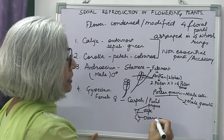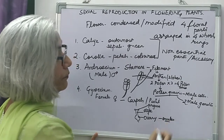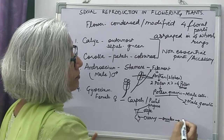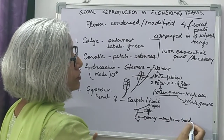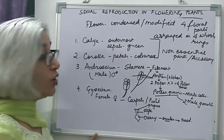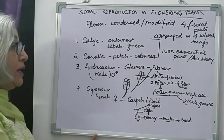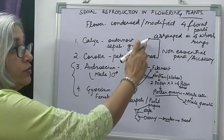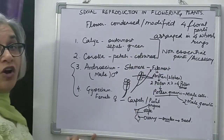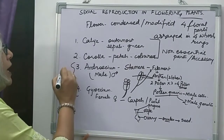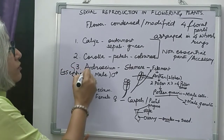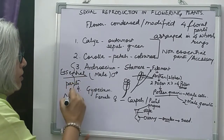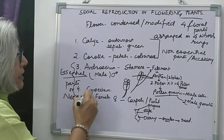The ovary contains ovules. Ovules form the seed after the process of fertilization. So this is the female part. The male and female parts — androecium and gynoecium — help in reproduction, which is the main function of a flower, so they are called the essential parts of a flower. Calyx and corolla do not help directly in reproduction and are called non-essential parts.